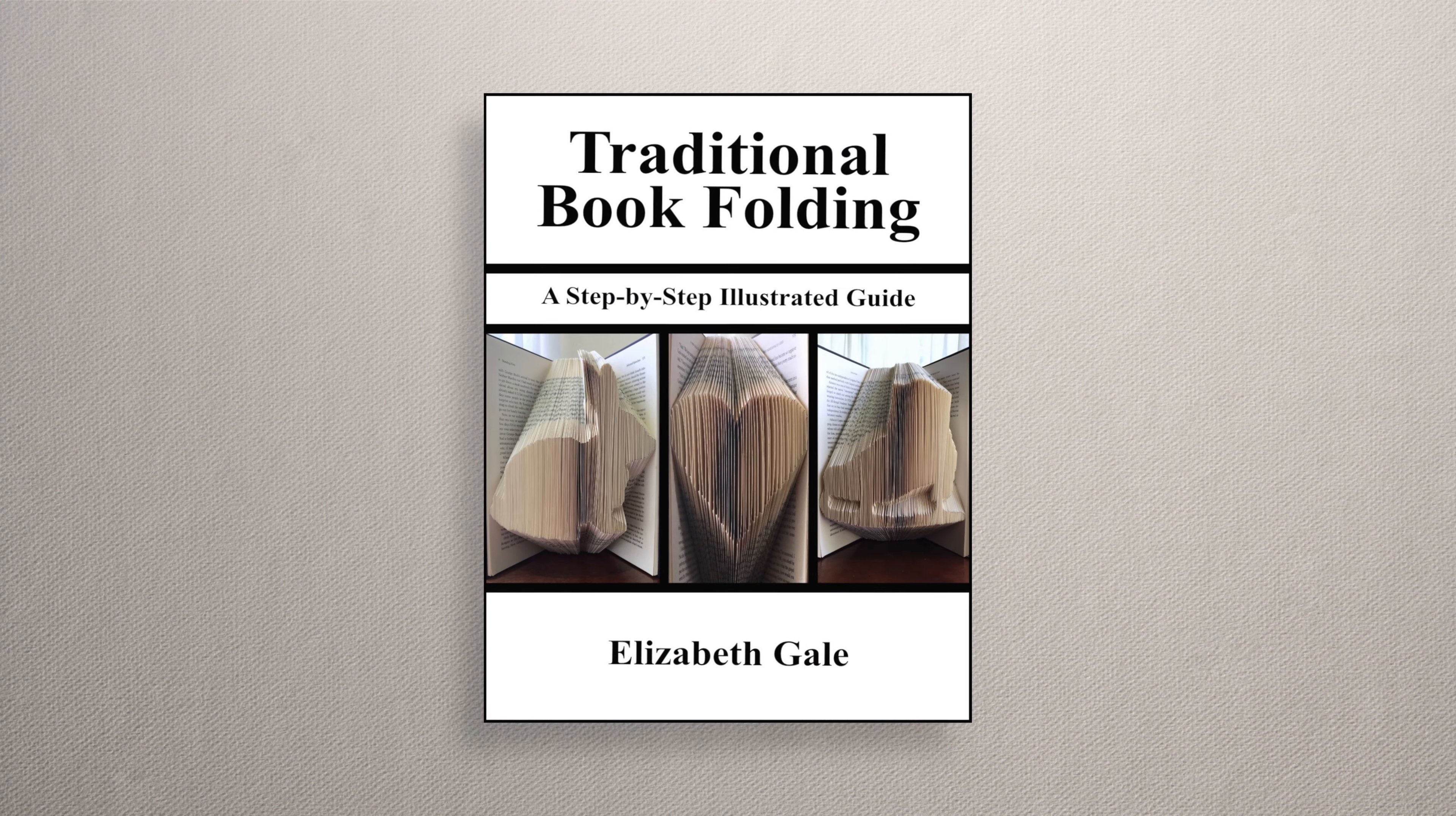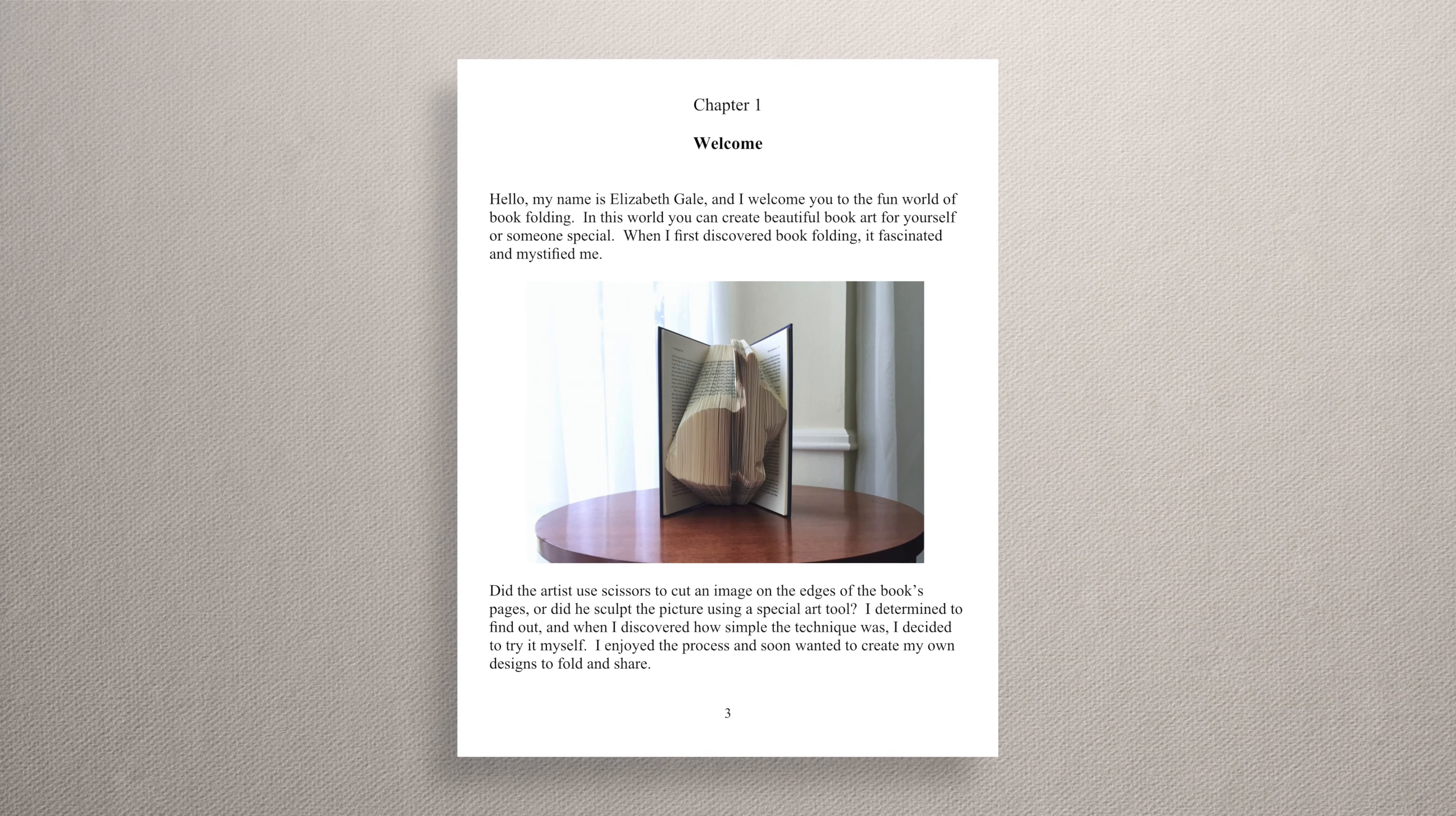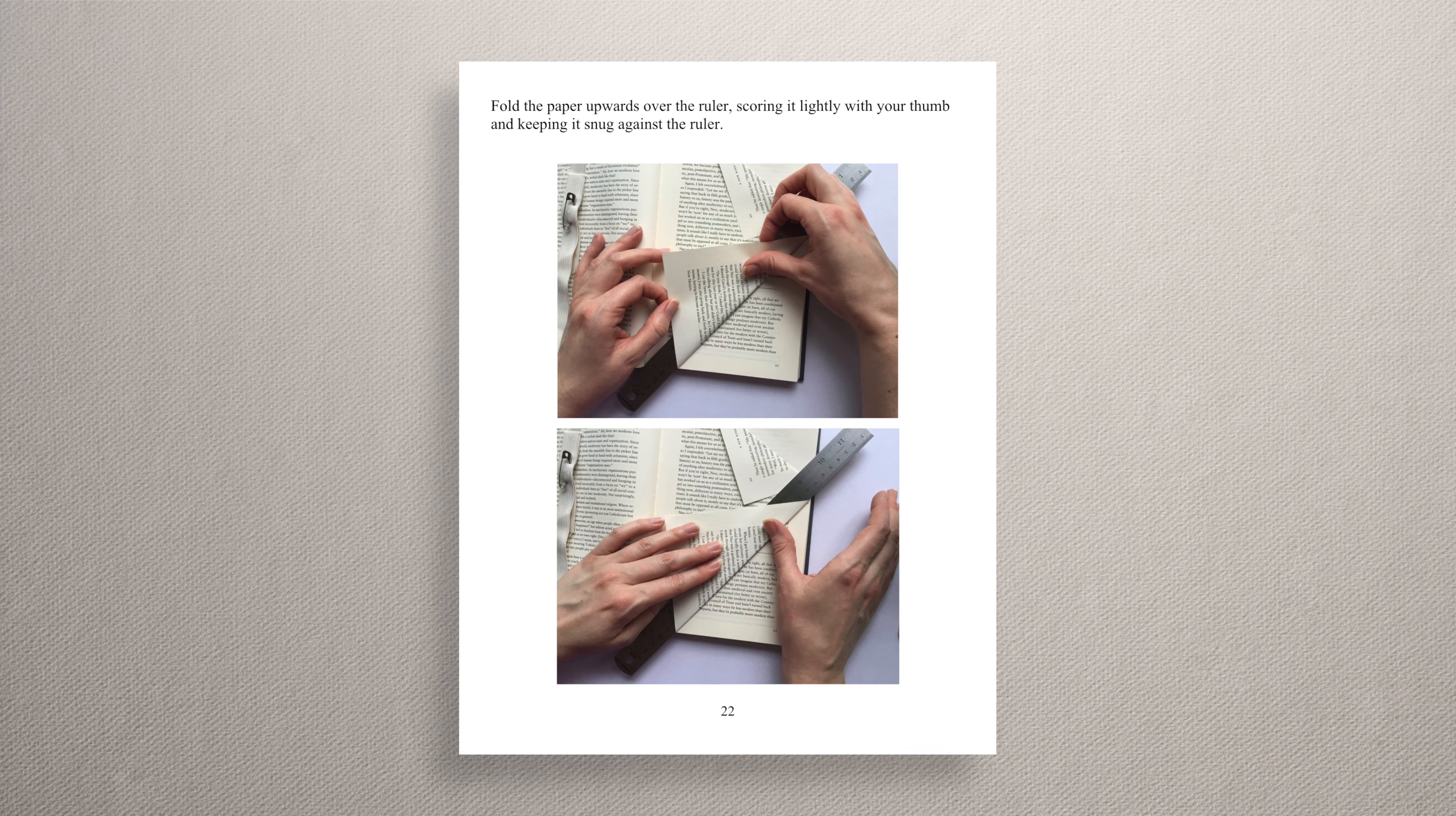When you order the angel pattern, you'll also receive a free PDF file of my ebook. It's called Traditional Book Folding, a Step-by-Step Illustrated Guide. If you're a beginner, this how-to guide is perfect for you. It's 68 pages long, and it has lots of clear photos in it that you can follow.